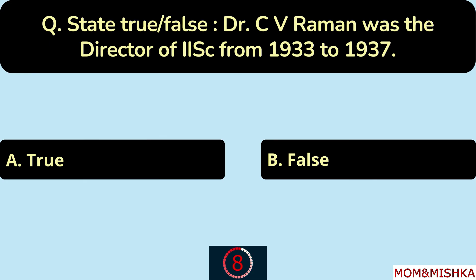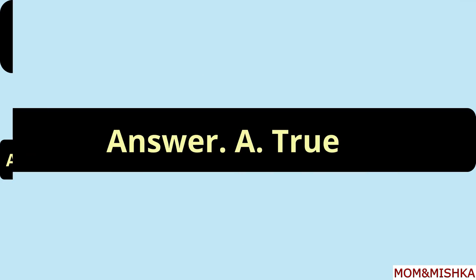State True or False: Dr. C. V. Raman was the director of IISC from 1933 to 1937. True, Option A.